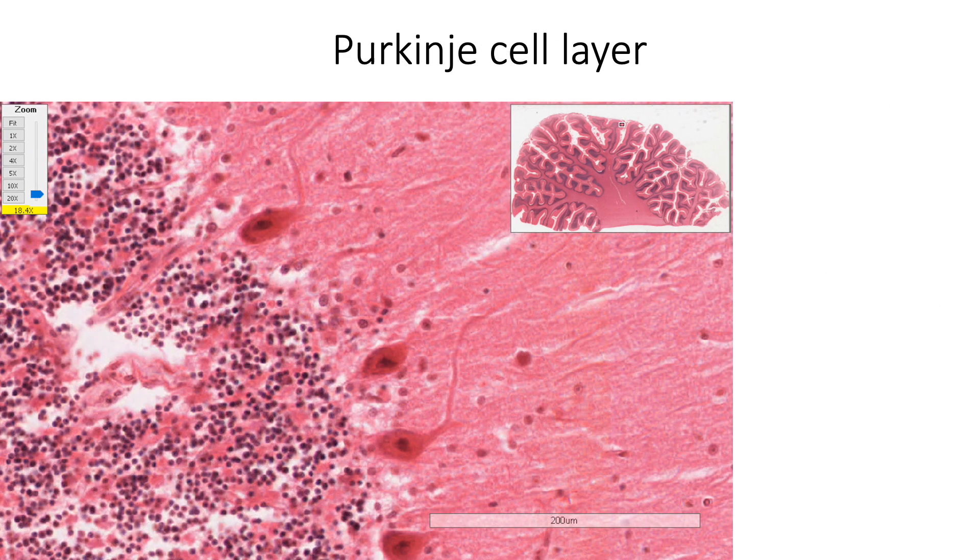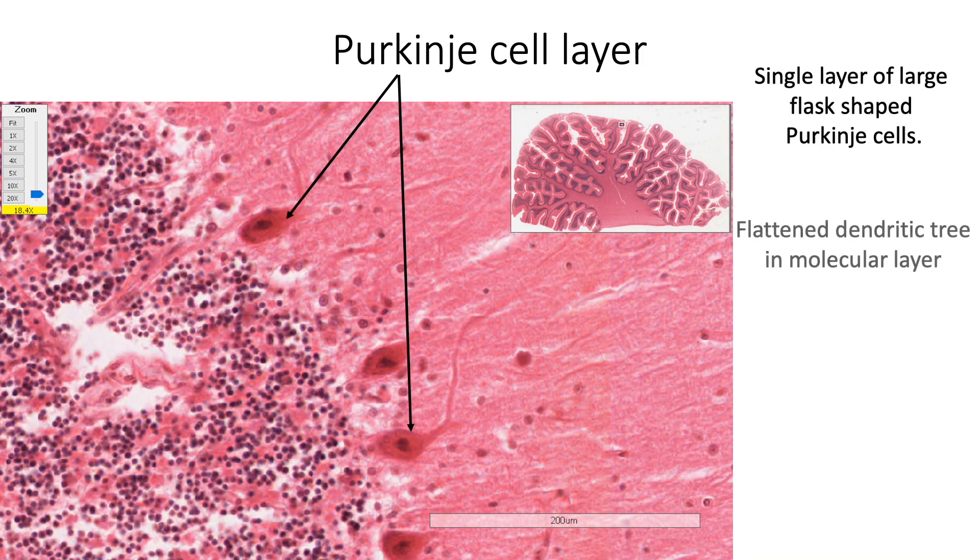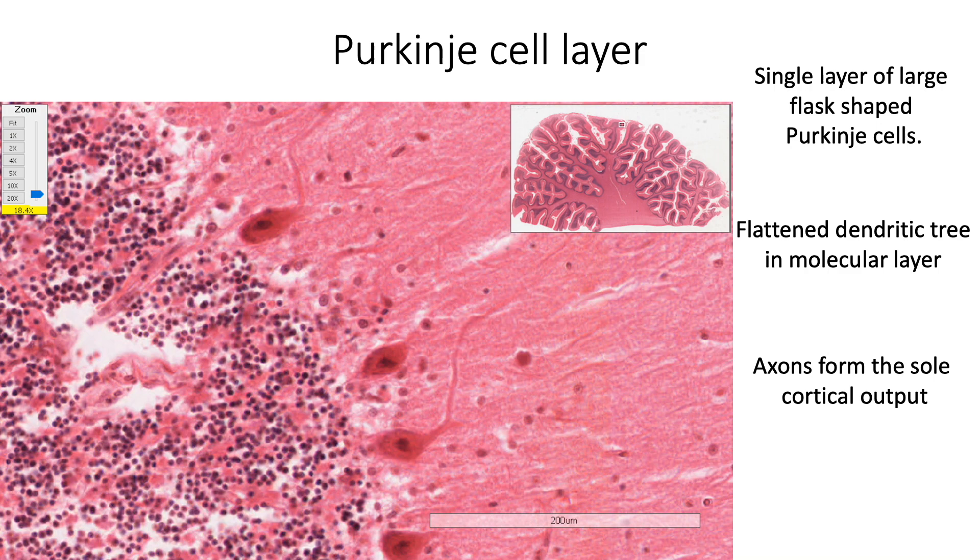The second layer is the Purkinje cell layer. It has a single layer of large flask shaped Purkinje cells, which have flattened dendritic tree in the molecular layer and they have a basal axon, which forms the sole cortical output. In addition to these Purkinje cells, we also find few granular cells, Golgi cells and Bergman glial cells in this layer.